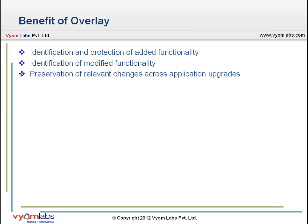During upgrades, an AR System installation program ignores overlays. It does not undo their modifications, override them, or delete them — in fact, it is unaware that they even exist. It changes only the objects that were installed with the application or server. After the upgrade, the application or server continues to use the overlay instead of the origin objects for runtime operations.